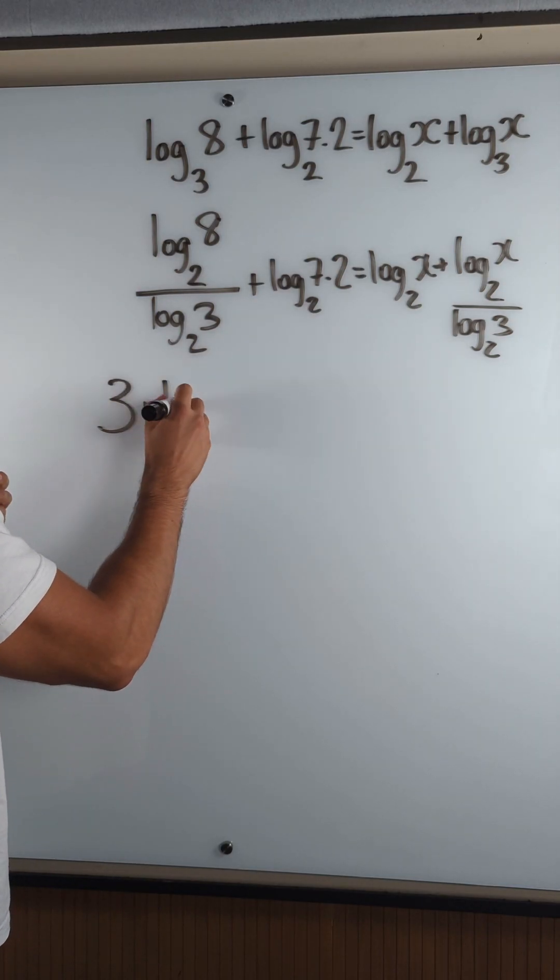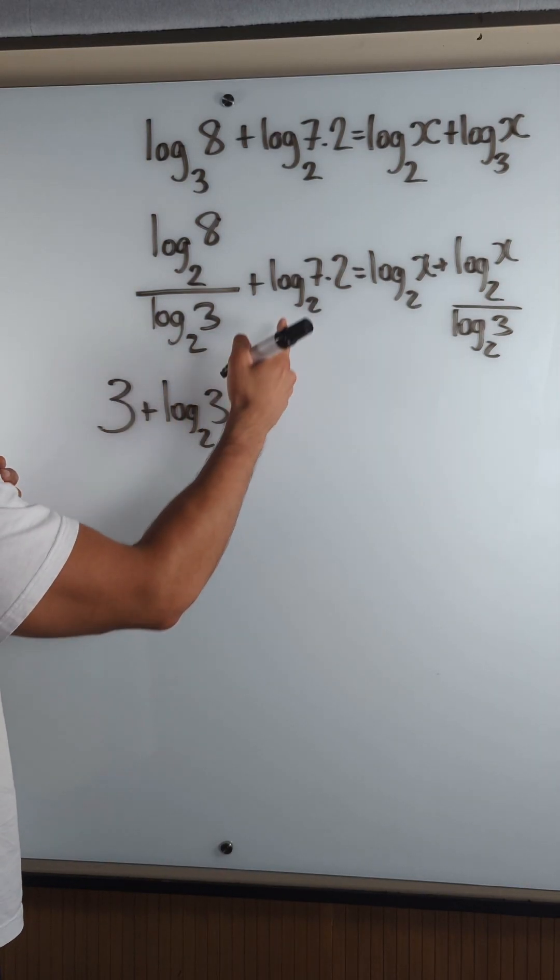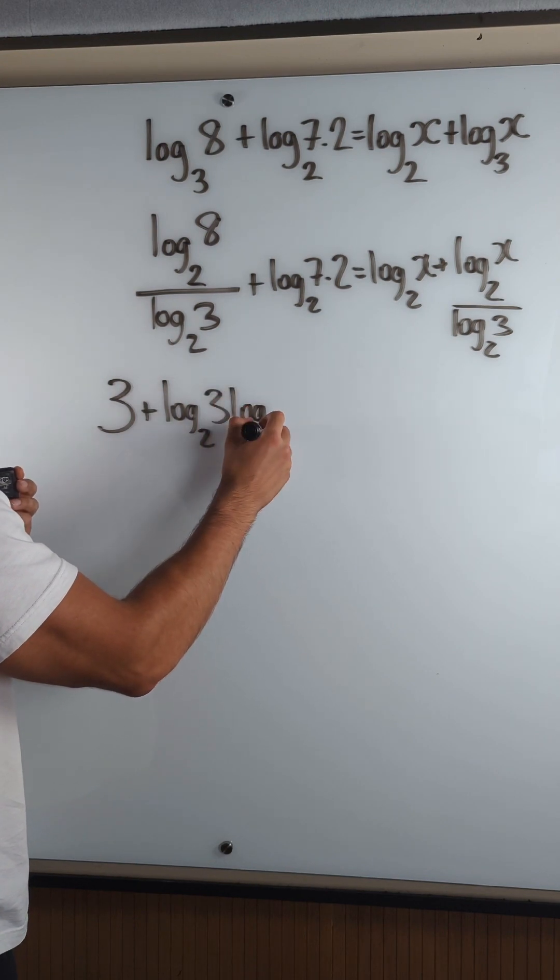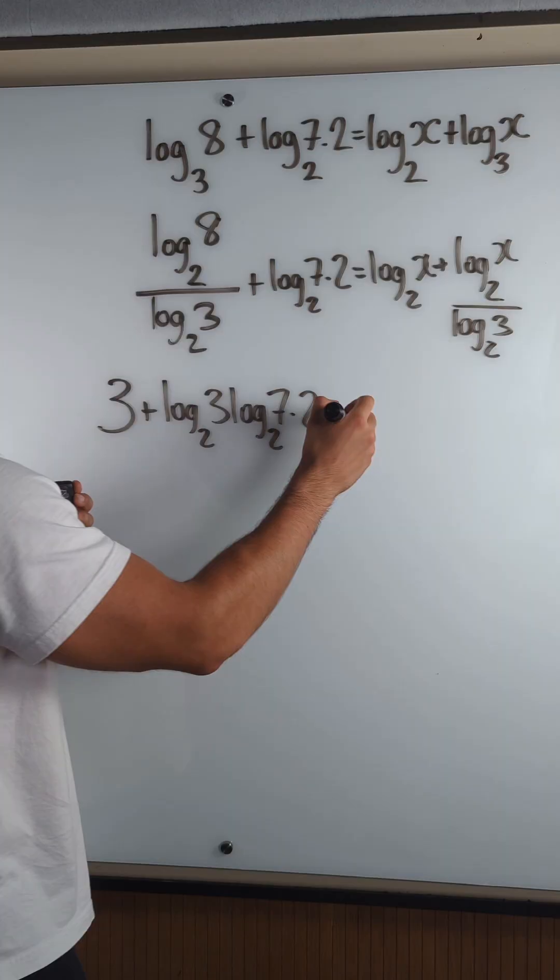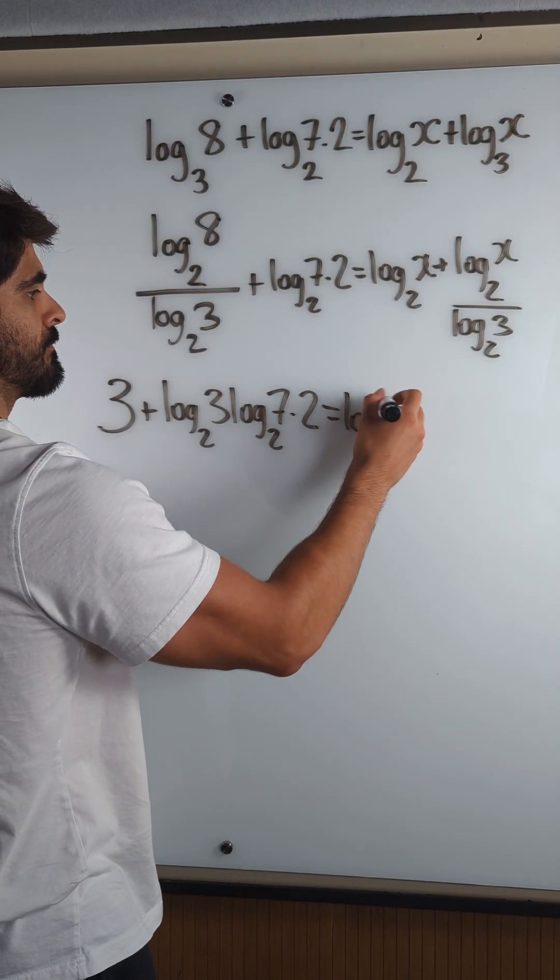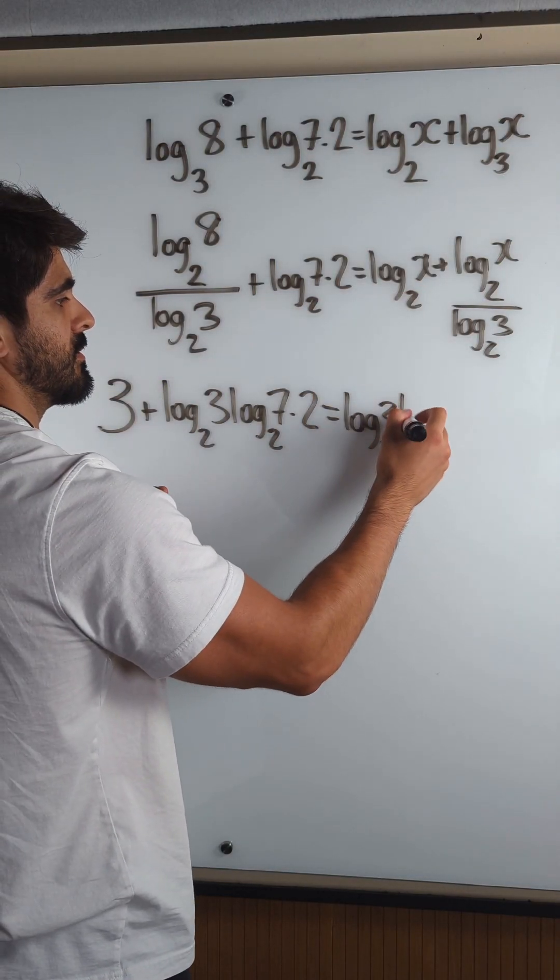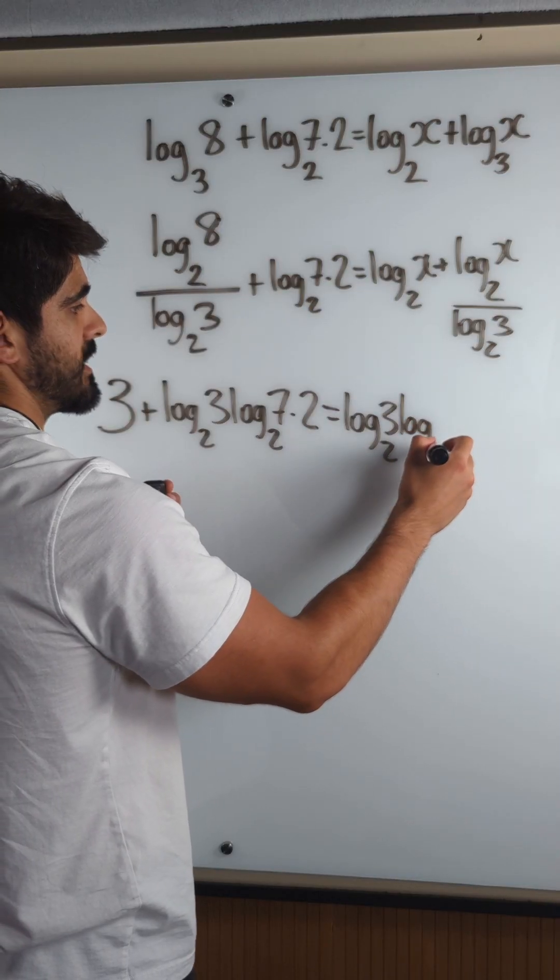This would be log base 2 of 3 times log base 2 of 7.2 is that times log base 2 of 3 times log base 2 of x.